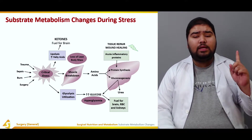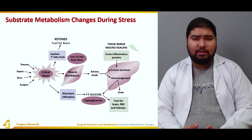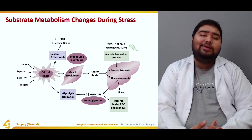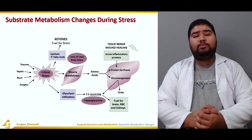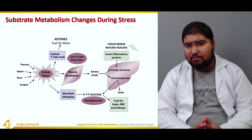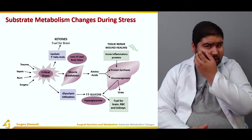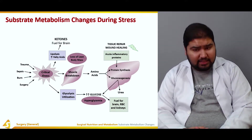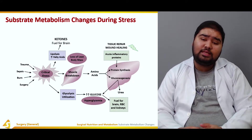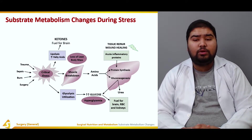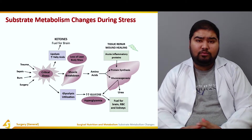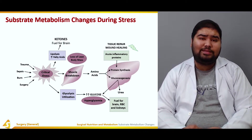To summarize: a stressor first causes glycolysis, which leads to hyperglycemia utilized as fuel for the brain, RBCs, and kidneys. This is followed by lipolysis, which causes production of free fatty acids and ketones — the ketones providing fuel for the brain. The muscles break down producing amino acids, which undergo protein synthesis to support acute inflammatory response and tissue repair and wound healing. Simultaneously, gluconeogenesis from proteins contributes to the steady supply of glucose.